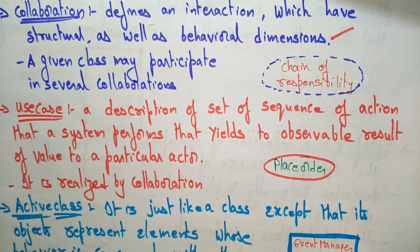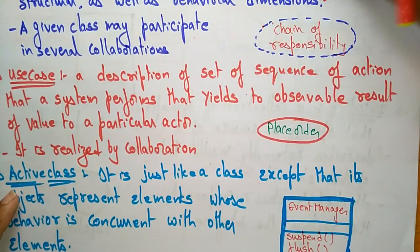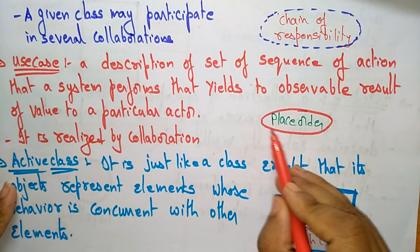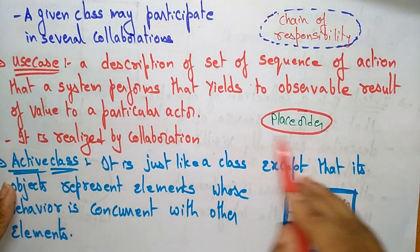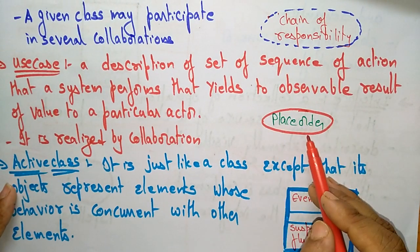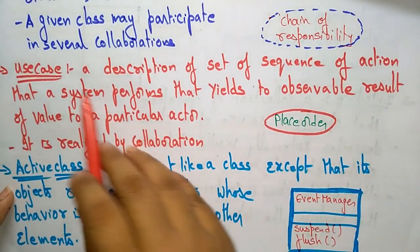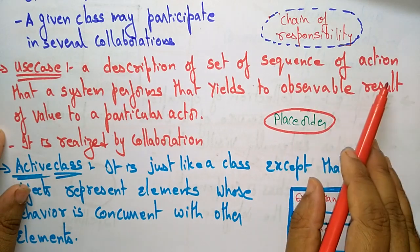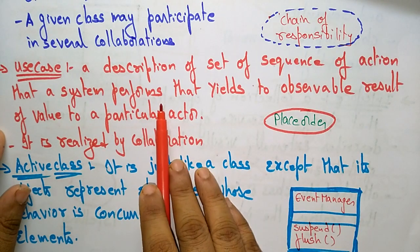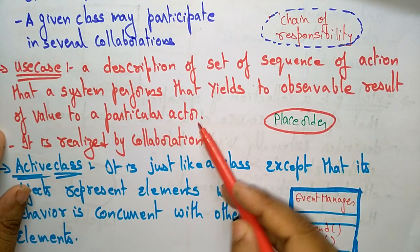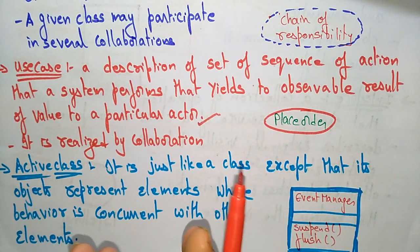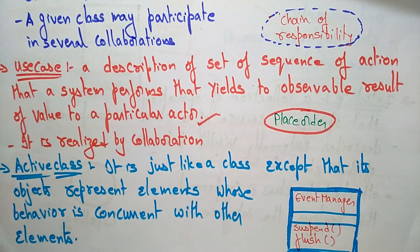The next structural thing is a use case, represented as a solid oval shape — for example, 'Place Order.' A use case is a description of a set of sequences of actions that a system performs that yields an observable result of value to a particular actor. One particular actor performs some action, and that is represented in the use case. It is realized by collaboration.